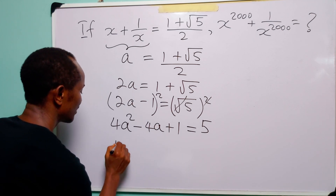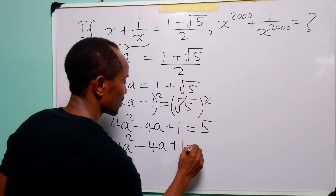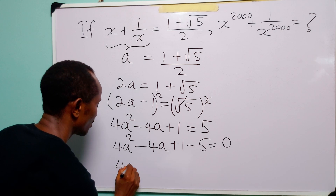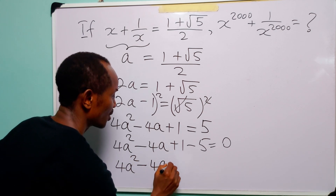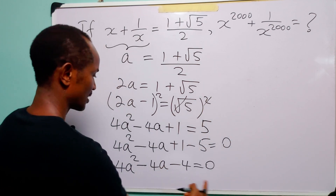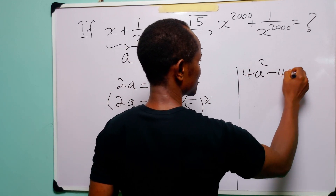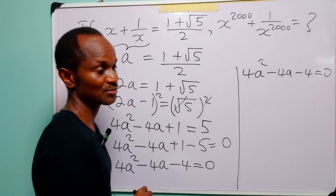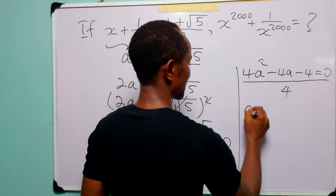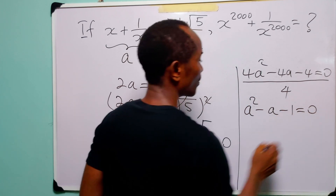Rearranging this equation, we have 4A squared minus 4A plus 1 minus 5 is equal to 0. That gives us 4A squared minus 4A minus 4 equals 0. Now we can divide through by 4, and we have A squared minus A minus 1 is equal to 0.